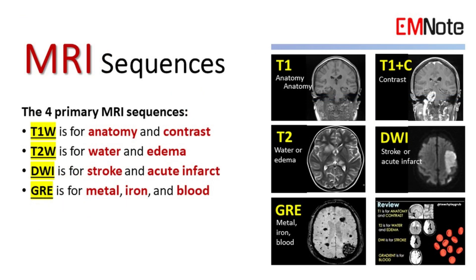In summary, there are four primary MRI sequences. T1W is for anatomy and contrast. T2W is for water and edema. DWI is for stroke and acute infarct. GRE is for metals, iron, and blood.